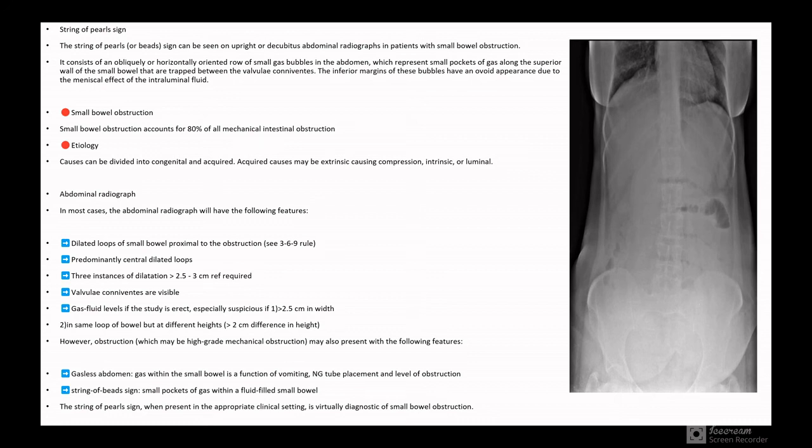High-grade mechanical obstruction may also present with the following features: gasless abdomen - gas within the small bowel is a function of vomiting, NG tube placement, and level of obstruction. String of pearls sign - small pockets of gas within fluid-filled bowel. When present in the appropriate clinical setting, it is virtually diagnostic of small bowel obstruction. You can see the image showing the beads or pearls present.